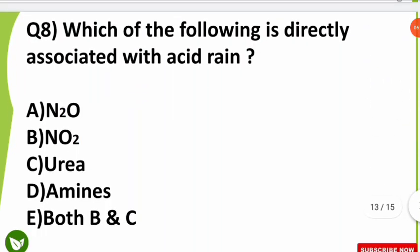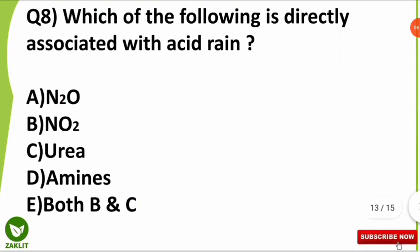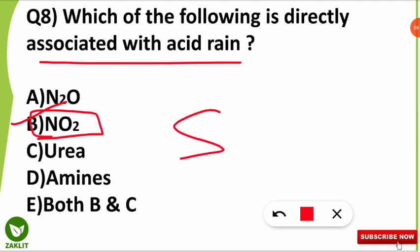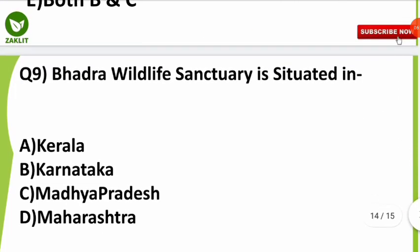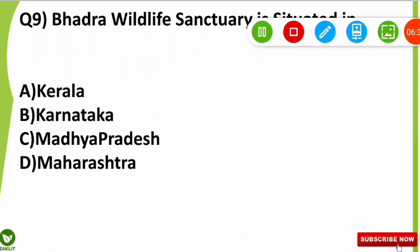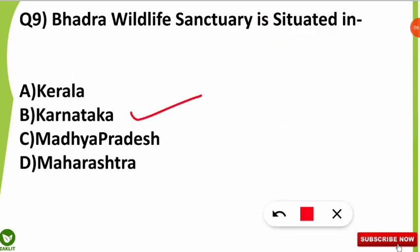The eighth question was: which of the following is directly associated with acid rain? The correct option is option B — oxides of nitrogen, specifically nitrogen dioxide, is mostly associated with acid rain along with sulfur dioxide. You can also learn more about acid rain by clicking the info button. The ninth question was: Bhadra Wildlife Sanctuary is situated in which state? The correct answer is Karnataka — Bhadra Wildlife Sanctuary is located in Karnataka.